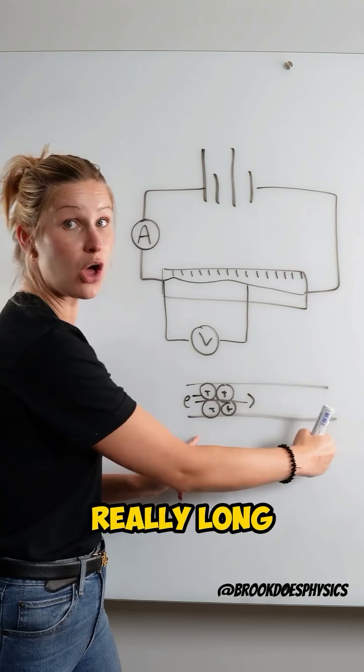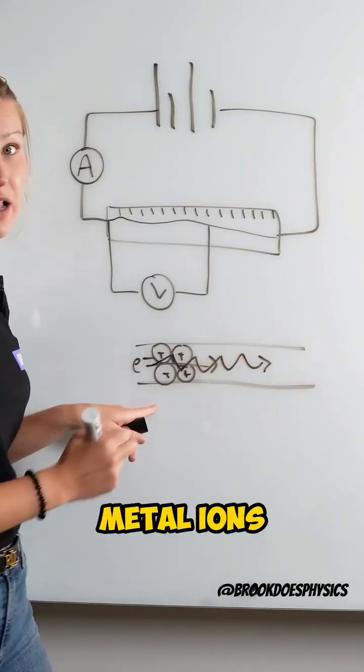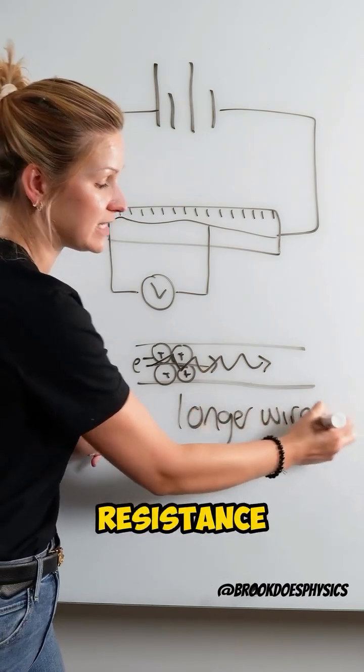So if I make this wire really long, those electrons are going to have loads of collisions with those positive metal ions. So we know that longer wires have a higher resistance.